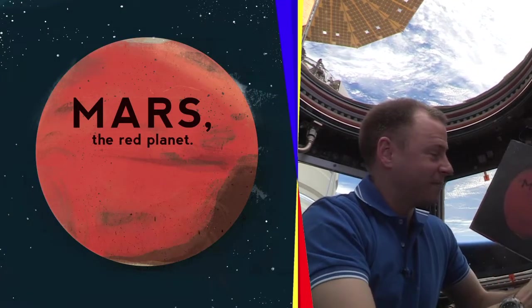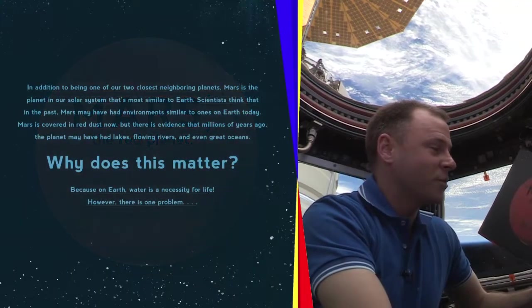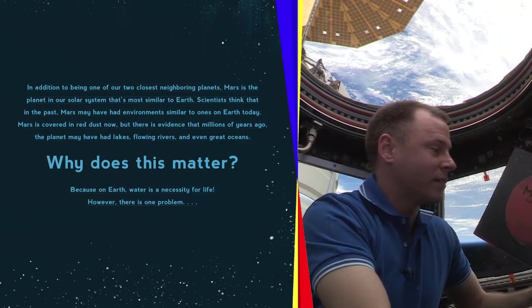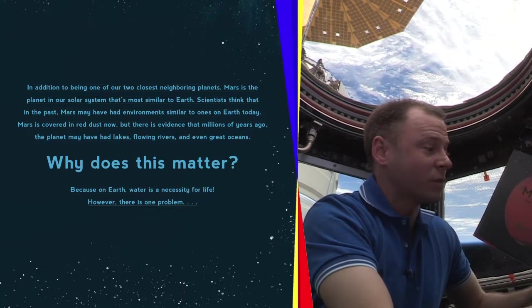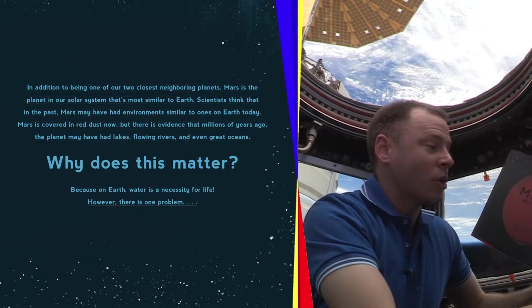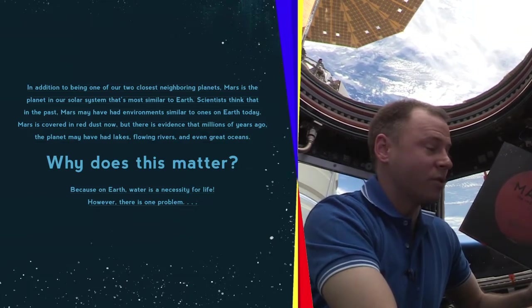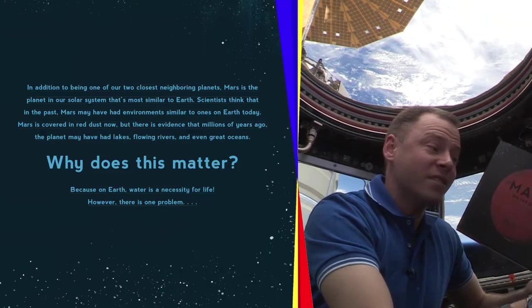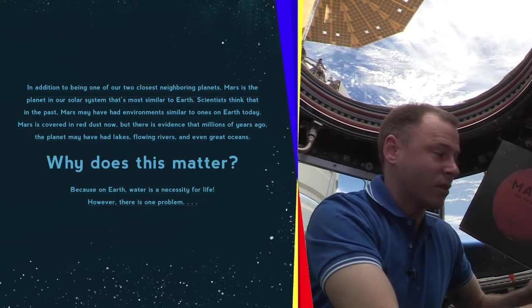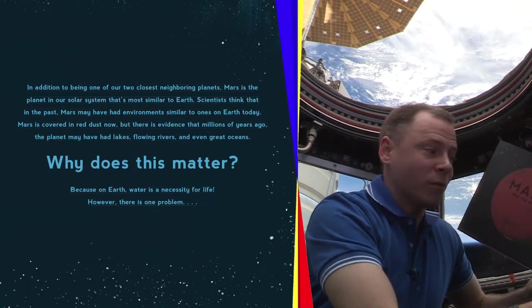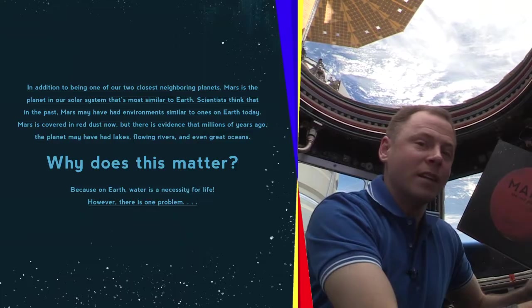Scientists decided the best place to look for other life was one of our closest neighboring planets, Mars, the red planet. In addition to being one of our two closest neighboring planets, Mars is the planet in our solar system that is most similar to Earth. Scientists think that in the past, Mars may have had environments similar to the ones on Earth today. Mars is covered in red dust now, but there is evidence that millions of years ago, the planet may have had lakes, flowing rivers, and even great oceans.